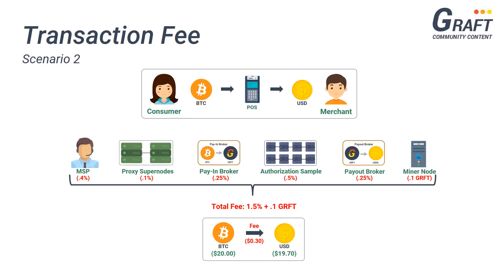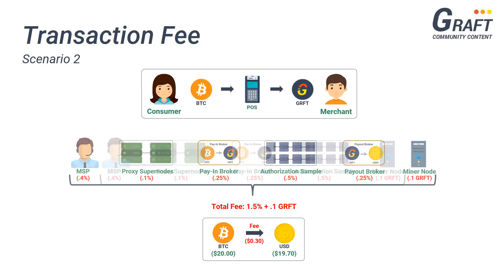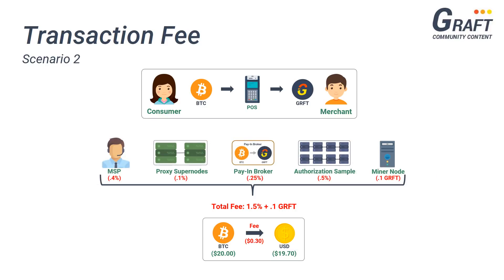For our next example, let's assume the exact same scenario, only instead of the merchant wanting to receive dollars as payout, they would prefer to receive Graft. In this scenario, the merchant would no longer need to use a payout broker, and the total overall transaction fee would drop down from 1.5% plus 0.1 Graft to 1.25% plus 0.1 Graft. Using the same $20 Bitcoin transaction example, the merchant would only pay a fee of 25 cents and receive a total of $19.75 in Graft.